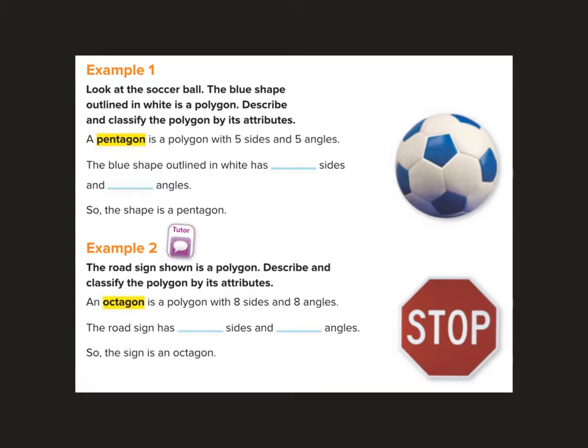Now we're back on your page. That was background knowledge I needed you to know. Let's look at example one. Look at the soccer ball. The blue shape outlined in white is a polygon. Describe and classify the polygon by its attributes. That shape right there has five sides. So the shape has five sides. And how many angles does it have? Let's count. One, two, three, four, five. So we've got five sides, five angles. So the shape is called a pentagon. Pentagons have five sides.